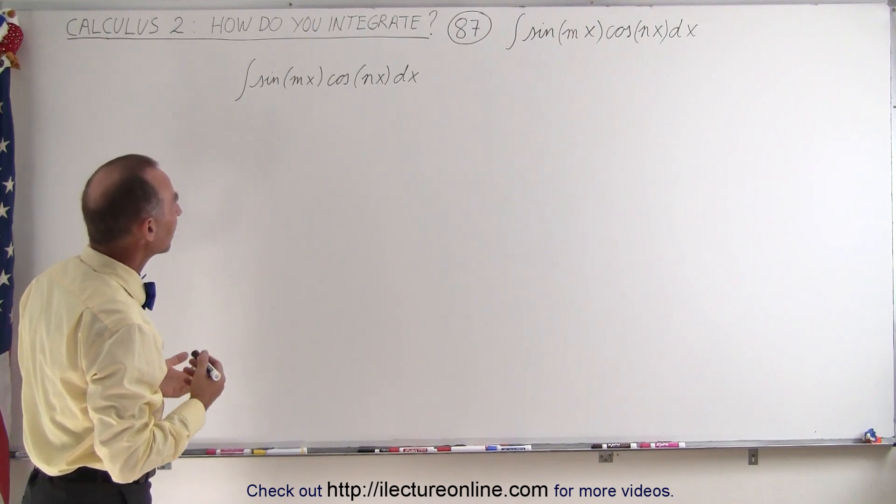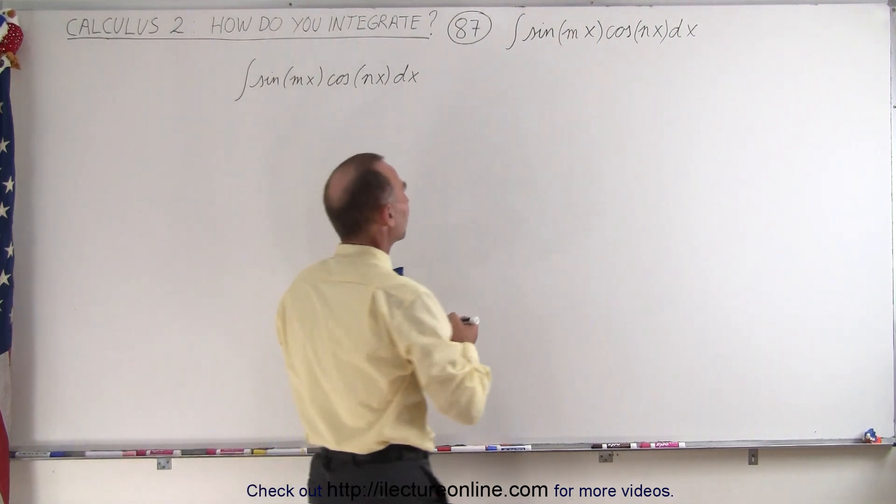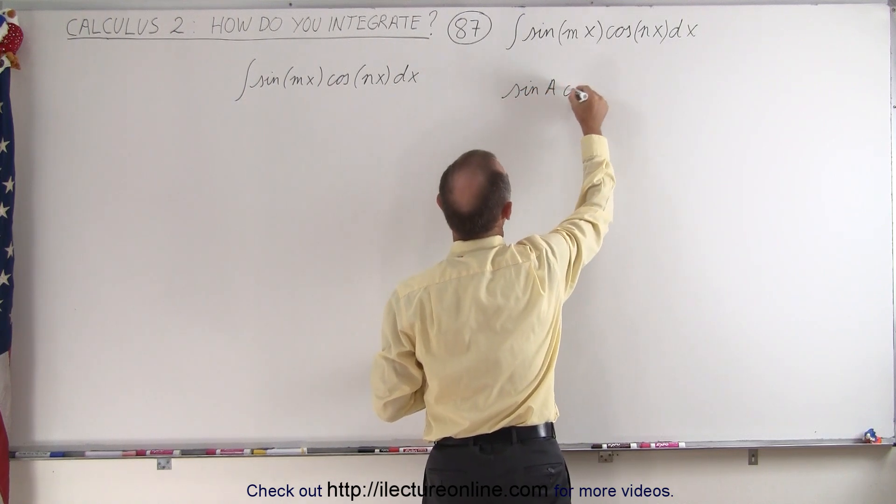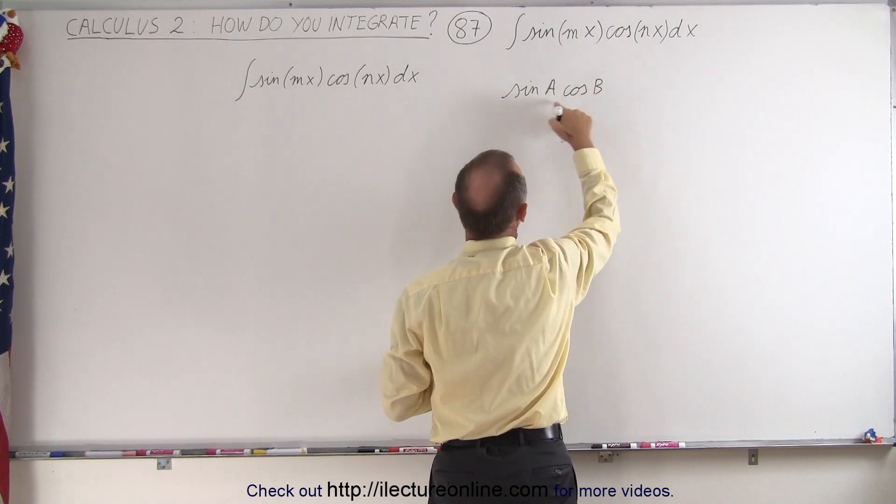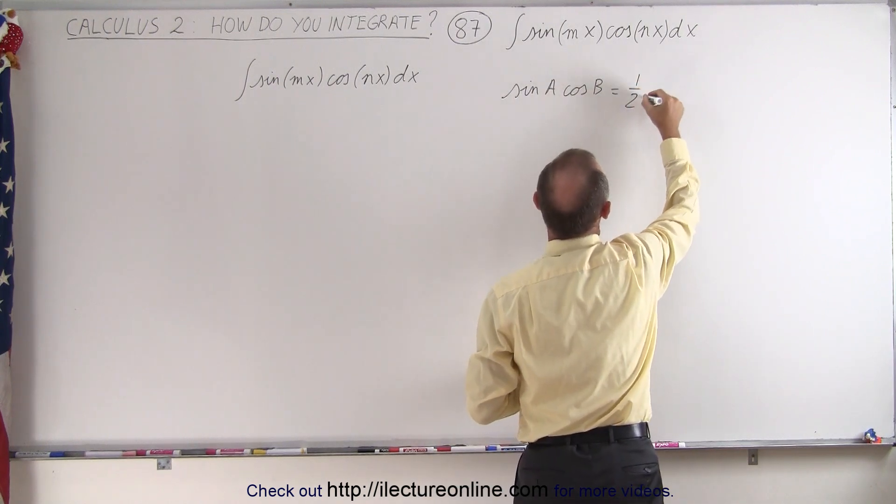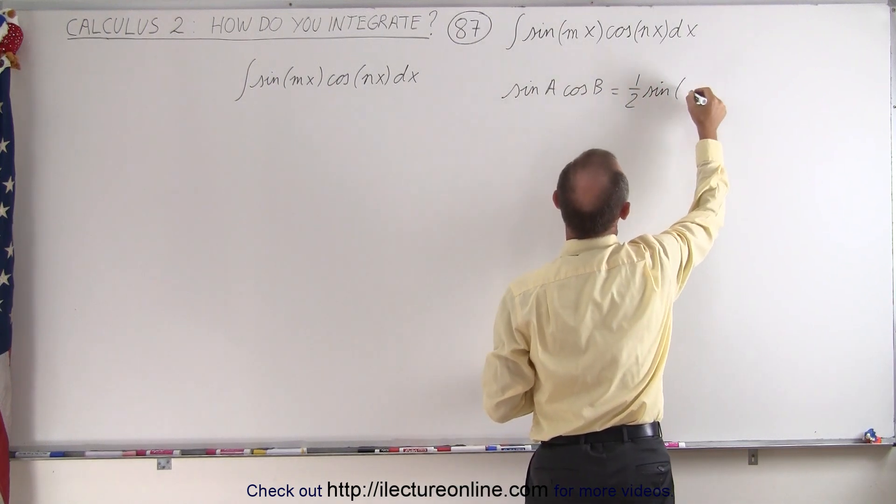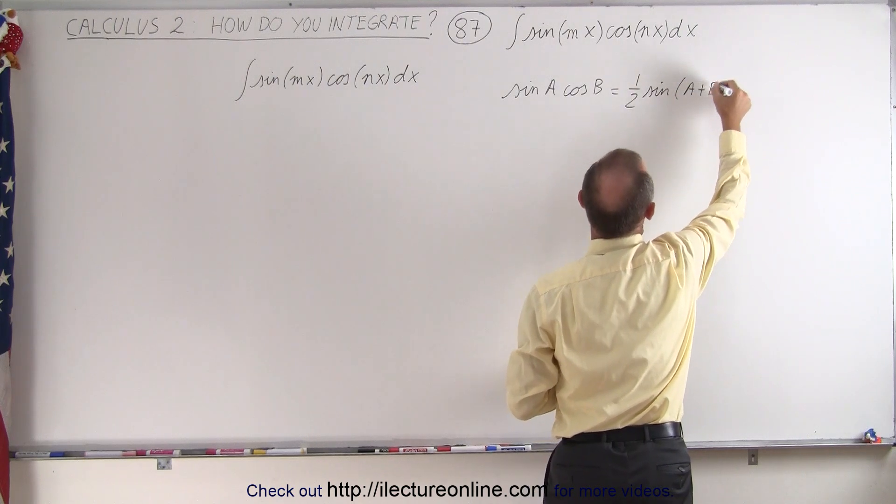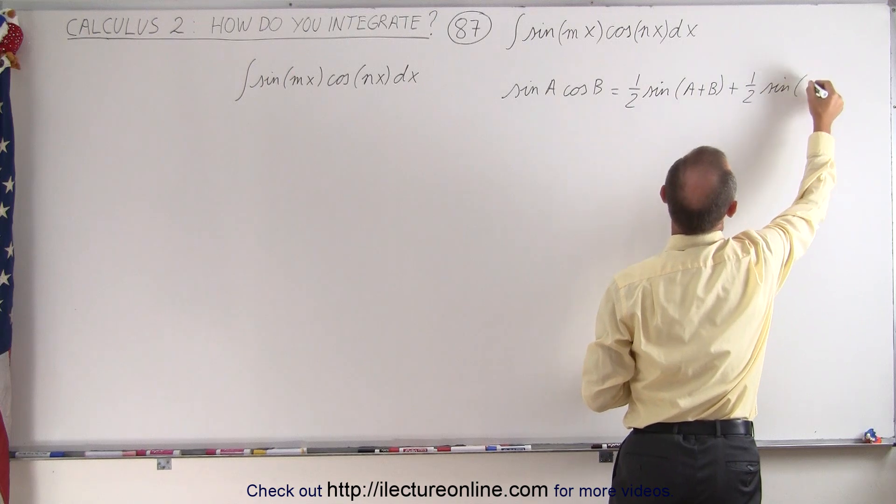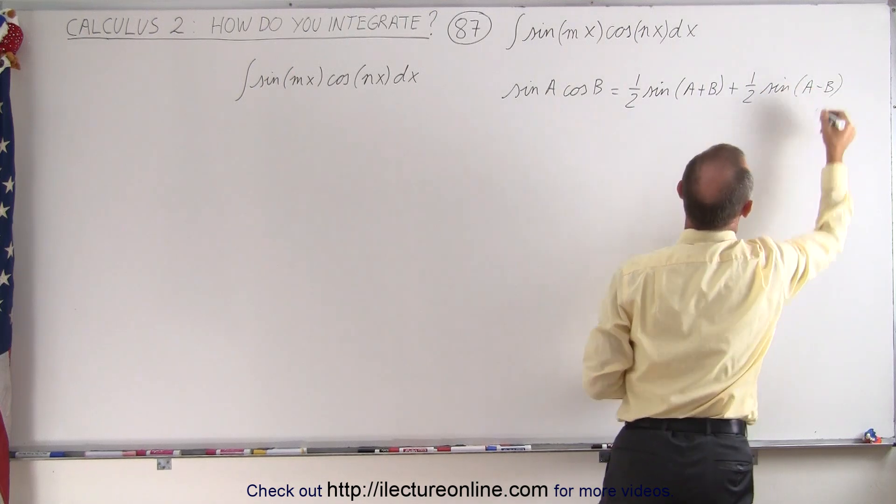What we need to do is come up with an identity. We need to realize that the sine of a times the cosine of b, notice that the angles are different, can be written as one half times the sine of the sum of the two angles plus one half times the sine of the difference between the two angles.